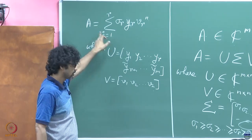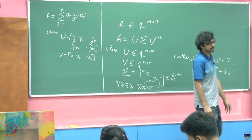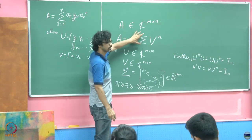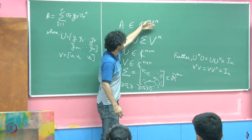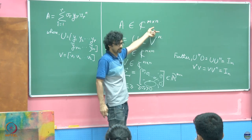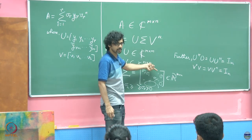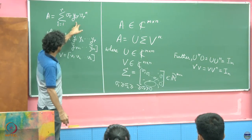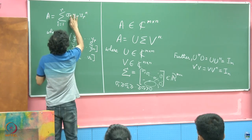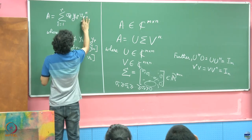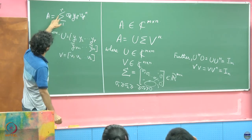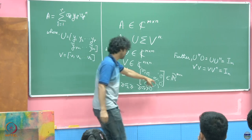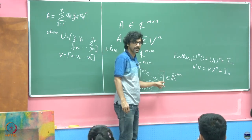Why is this obvious? The way I would write this expression: I can just stack up the columns side by side and then stack up the rows of V with their conjugations one on top of the other, and this form results. I am only taking r terms — the rest have no weight except 0.